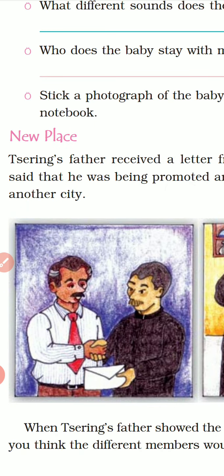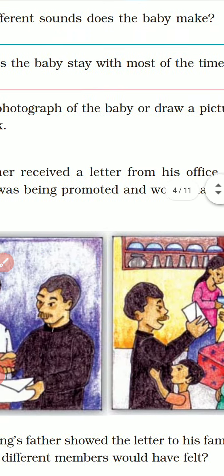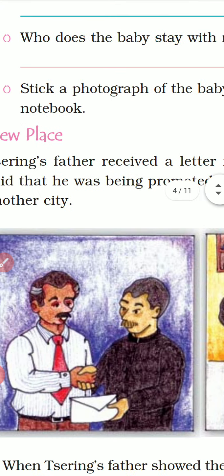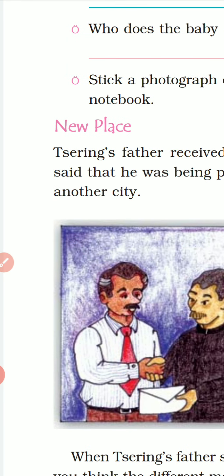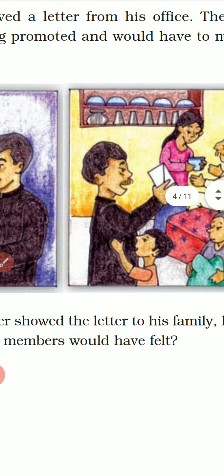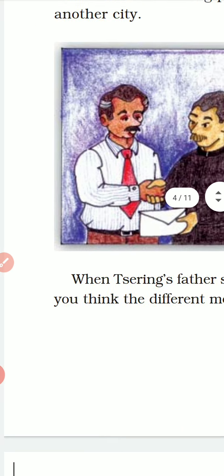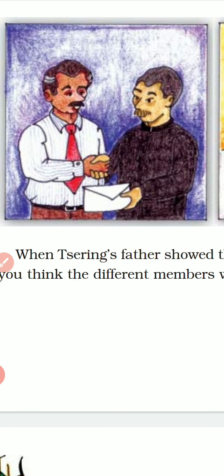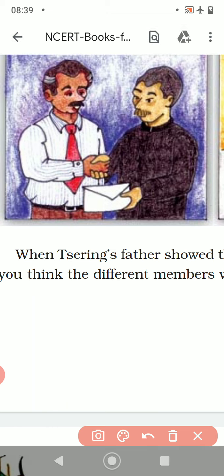Zering's father received a letter from his office. The letter said that he was being promoted and would have to move to another city. So he got a promotion letter and along with that he also received a transfer letter. When Zering's father showed the letter to his family, how do you think the different members would have felt?